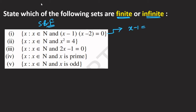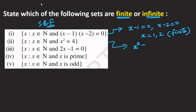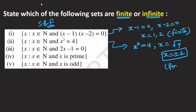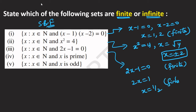First example: x - 1 = 0 and x - 2 = 0, giving x = {1, 2} — a finite number of elements, so this is a finite set. Second: x² = 4, so x = ±√4 = ±2 — two values, so also finite. Third: 2x - 1 = 0, x = 1/2 — finite value, so finite set.